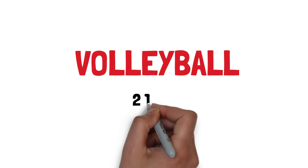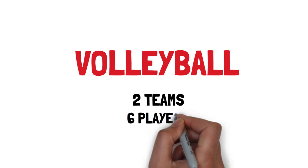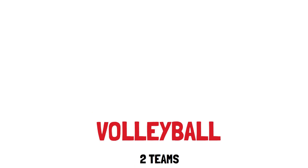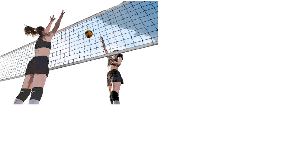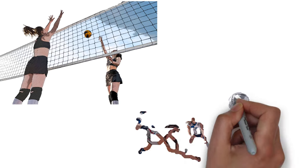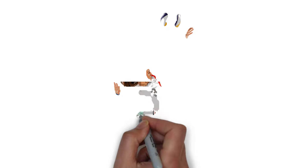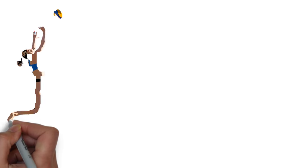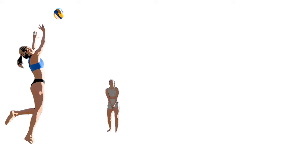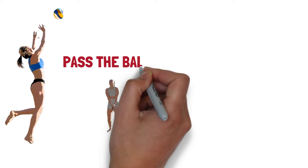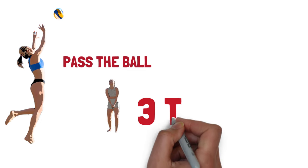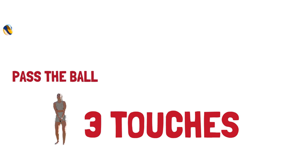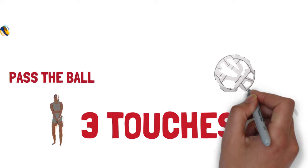Volleyball: a game played by two teams, usually of six players on a side, in which the players use their hands to bat a ball back and forth over a high net, trying to make the ball touch the court within the opponent's playing area before it can be returned. To prevent this, a player on the opposing team bats the ball up and toward a teammate before it touches the court surface. The teammate may then volley it back across the net or bat it to a third teammate who volleys it across the net. A team is allowed only three touches of the ball before it must be returned over the net.